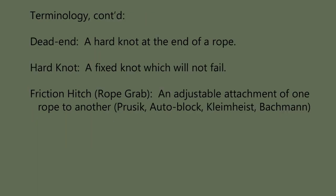A dead end is a hard knot at the end of the rope, and a hard knot is a fixed knot which will not fail. That's not to say that the rope couldn't fail, but the knot will not come untied. Some examples of a hard knot would be a figure eight on a bight, overhand on a bight, or a bowline. Lastly, a friction hitch or rope grab is an adjustable attachment of one rope to another, such as a Prusik, Autoblock, Klemheist, or Bachman.